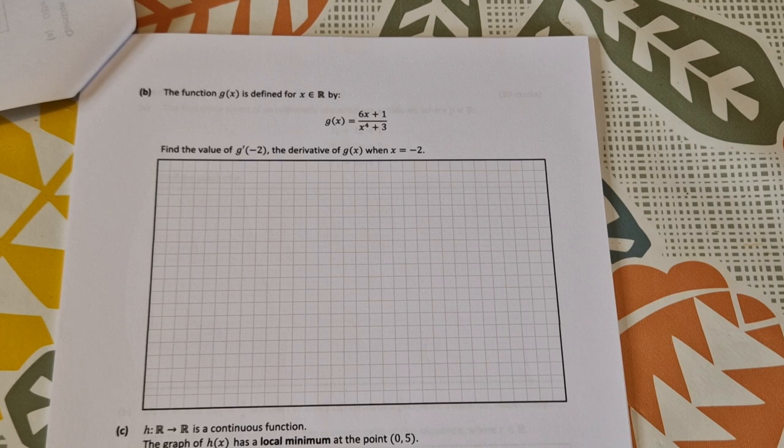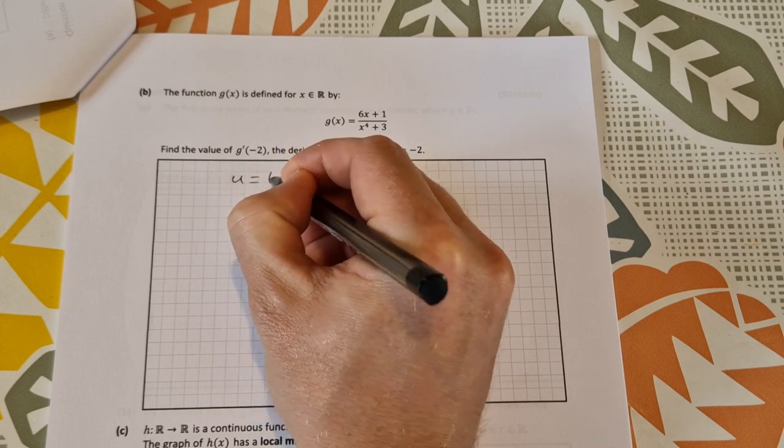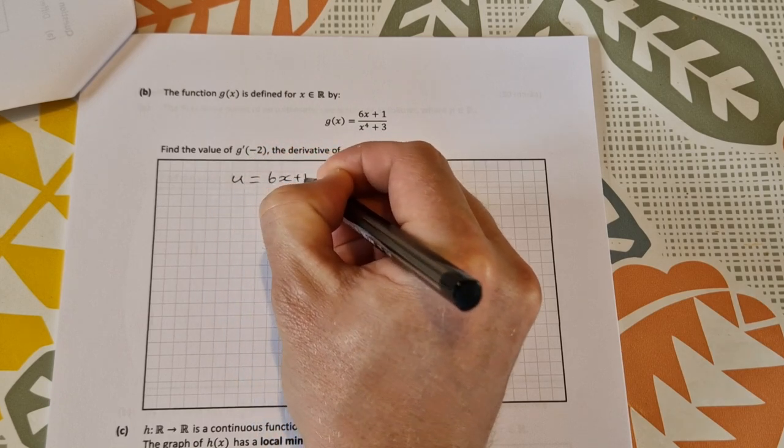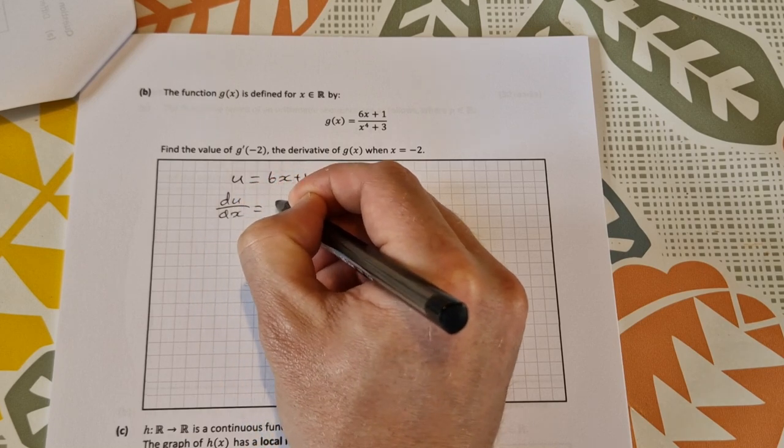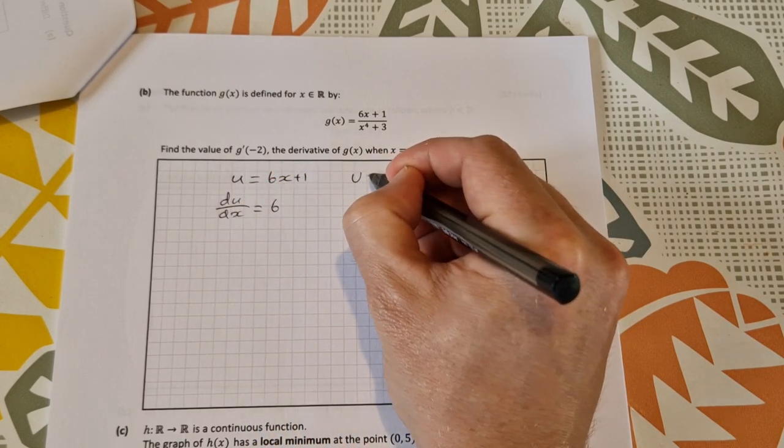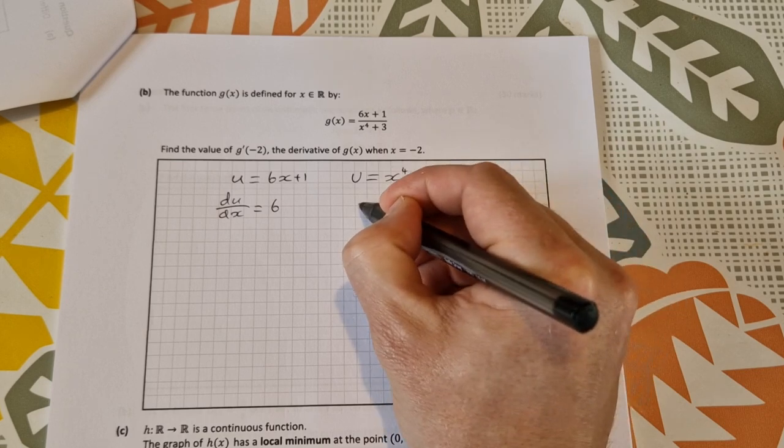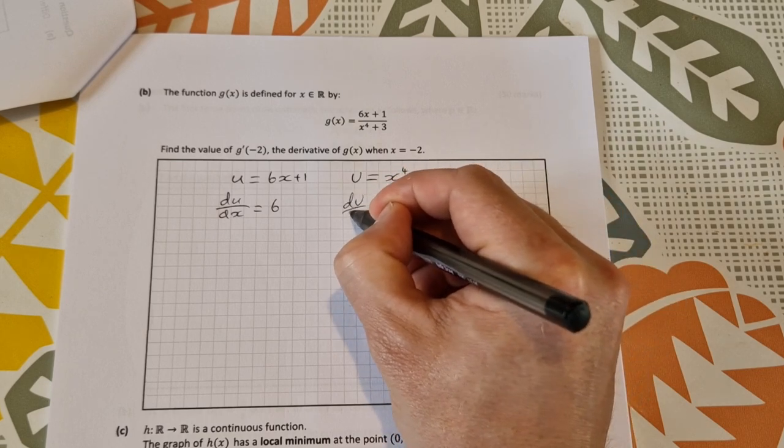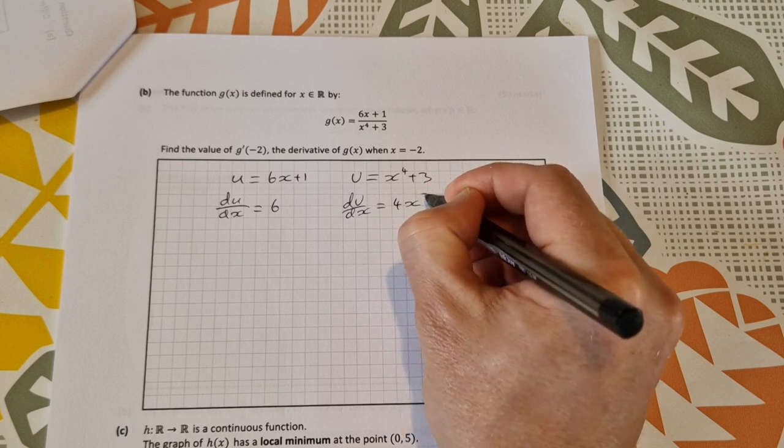u = 6x + 1, so du/dx = 6. v = x⁴ + 3, so dv/dx = 4x³. Then applying the quotient rule.